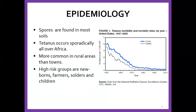High-risk groups are normally newborn babies, depending on how they have been born — whether it was a hospital-assisted delivery or at home, and what equipment was used to cut the cord. Other high-risk groups include farmers, soldiers, and children.